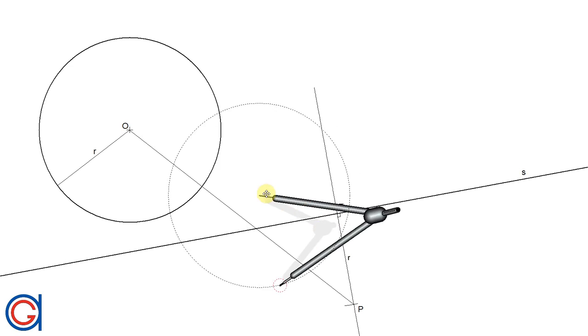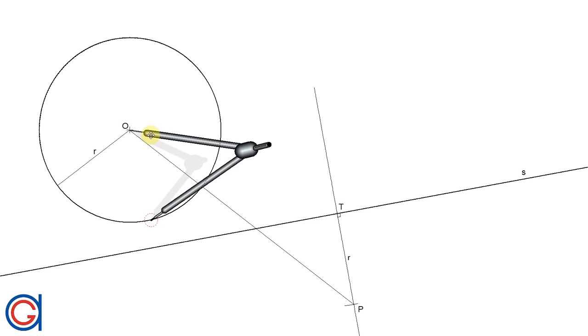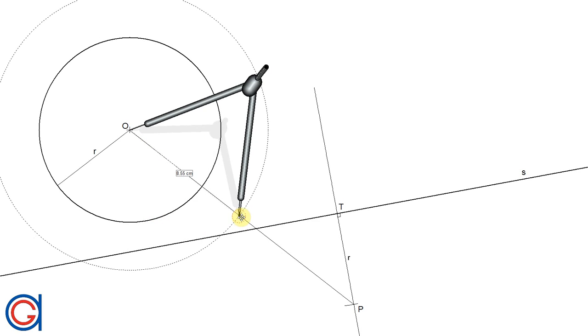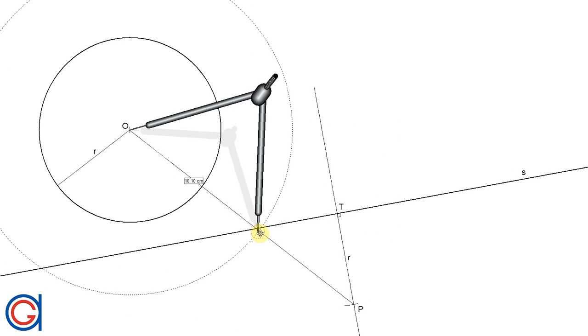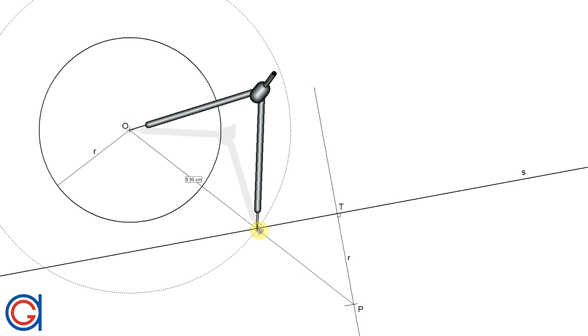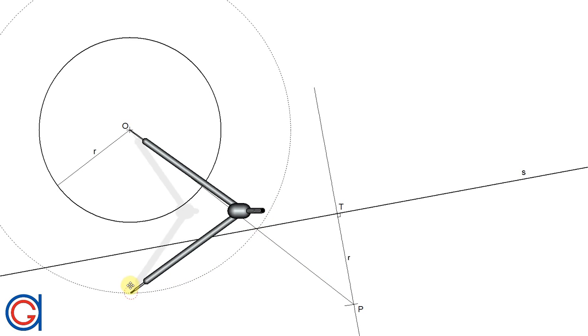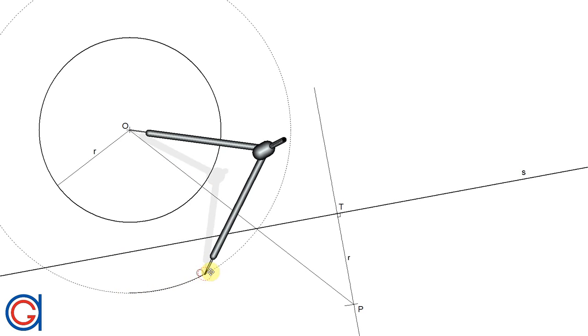Setting our compass to any radius slightly longer than half the length of the line, we scribe an arc above and below the line OP, as can be seen here.